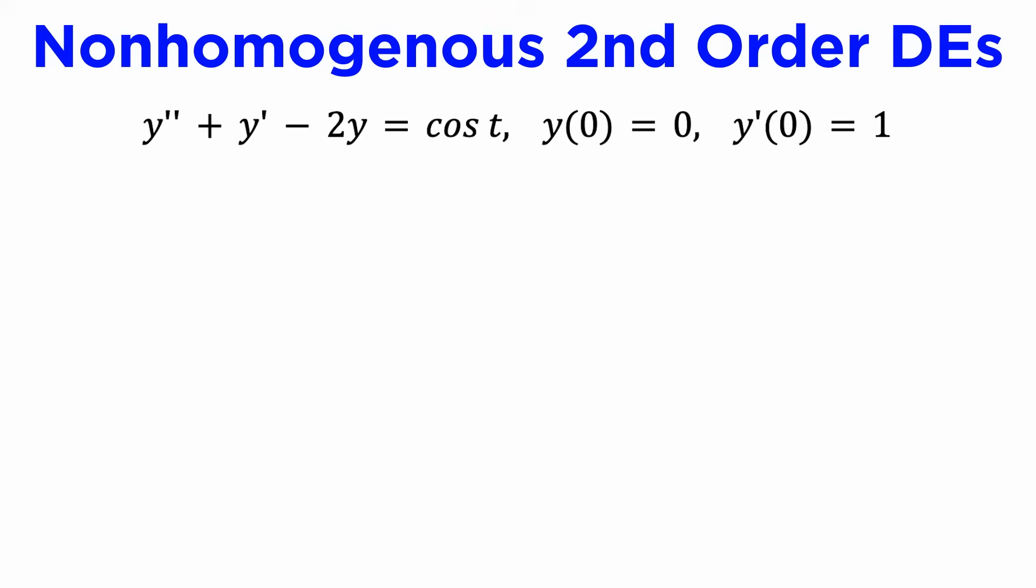Let's see an example. Suppose we want to solve the non-homogeneous second order DE, y double prime plus y prime minus 2y equals cosine of t, with initial conditions y of 0 is 0 and y prime of 0 is 1.